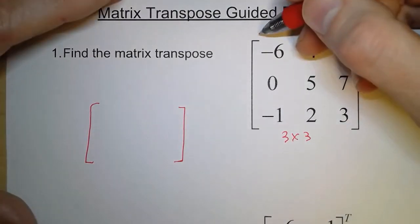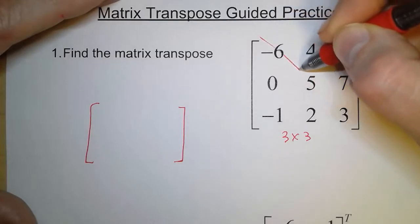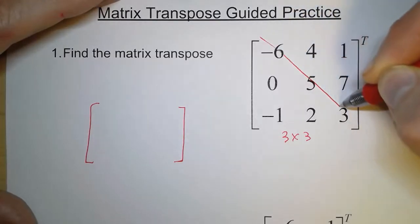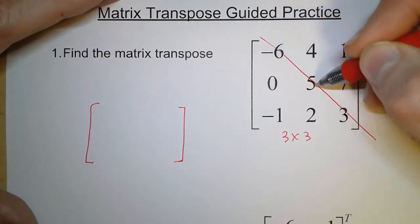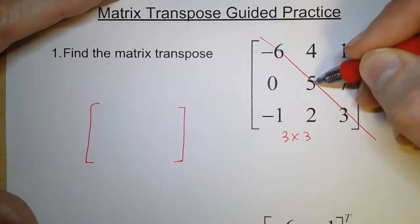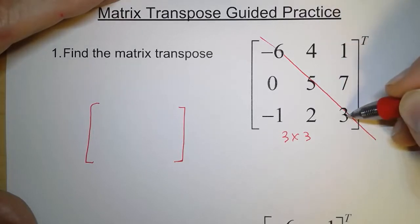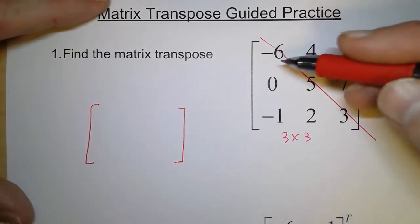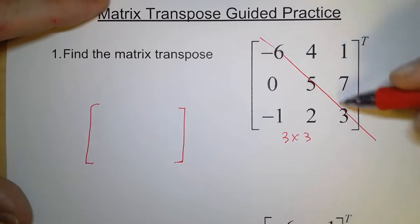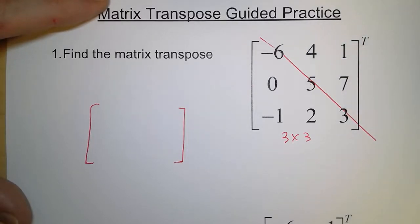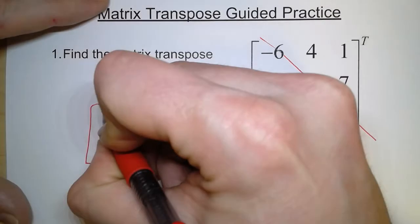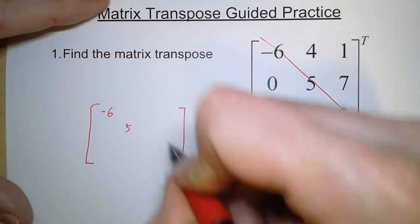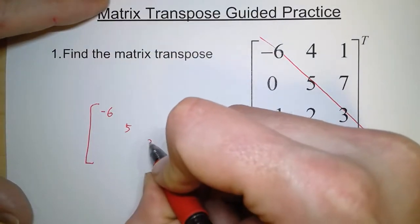Now the first thing to do is we want to draw a line diagonally like this, from the first one down to the second row, second column, third row, third column, and if our matrix were bigger, we would keep going. These numbers don't change position — they stay put. So we have negative 6, we have 5, and we have 3.